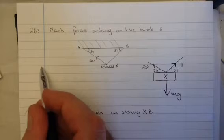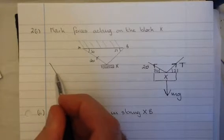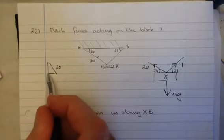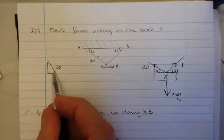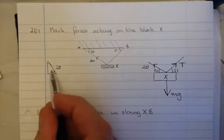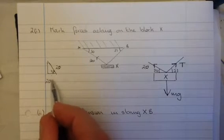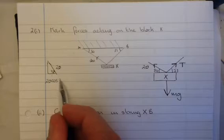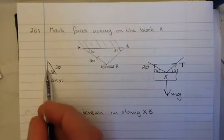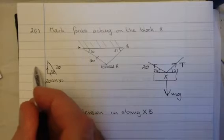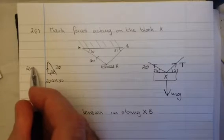So just taking you through how to resolve the force again. If we know that's 20, we can resolve it into perpendicular forces using the angle 30. So in this direction, it's going to be 20 cos 30. And in this direction, it's going to be 20 sin 30.